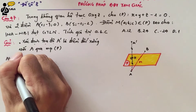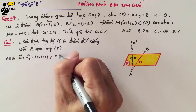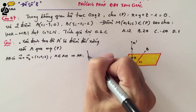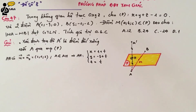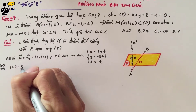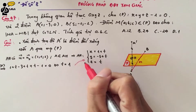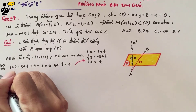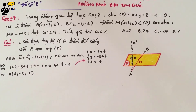Line AH has direction vector U equal to the normal vector of P, with coordinates (1, 1, 1). Using point A, the parametric equations of AH are: x = 1 + t, y = -3 + t, z = t. Substituting into the plane equation gives 1 + t - 3 + t + t - 1 = 0, which solves to t = 1. Substituting back gives x = 2, y = -2, z = 1. So point H has coordinates (2, -2, 1).